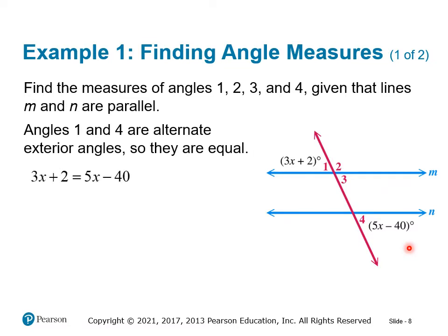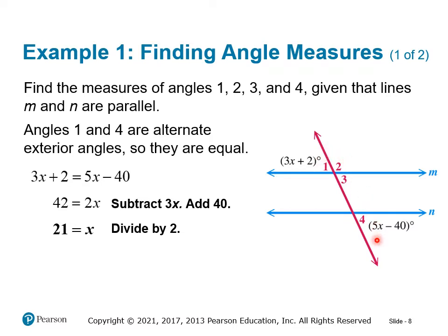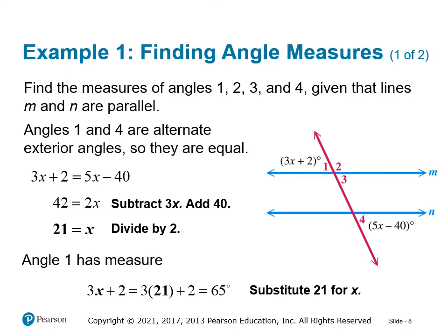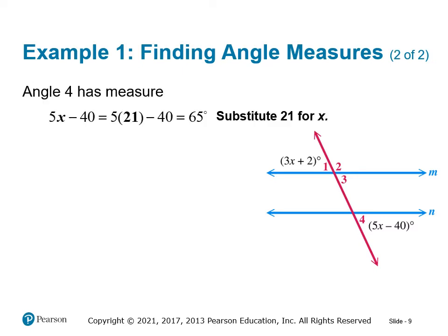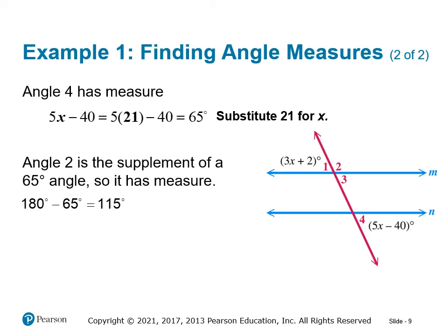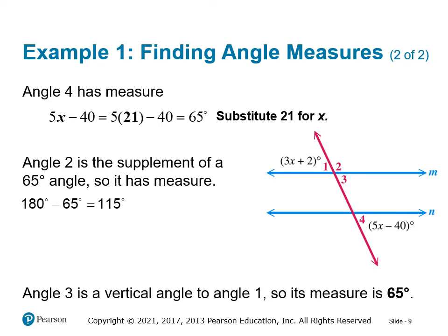Since angles one and four are equal, we set the two expressions equal: 3x + 2 = 5x − 40. Solving, we get x = 21. Plugging in, angle one equals 3(21) + 2 = 65 degrees. Angle four is the same measure, 65 degrees, which we can verify by plugging in 21. Angle two is the supplement of angle one: 180 − 65 = 115 degrees. And angle three is a vertical angle with angle one, so it also measures 65 degrees.